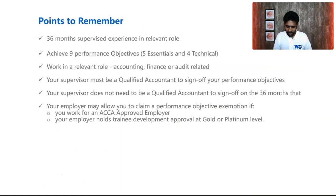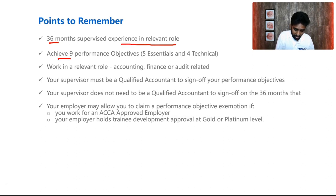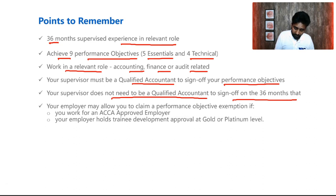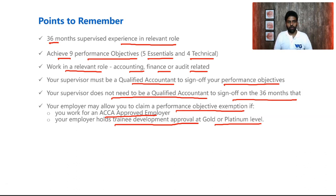To quickly summarize: to complete your PER, you need 36 months of supervised experience in a relevant role. You need to achieve nine performance objectives — five essential, four technical. You need to work in a relevant role like accounting, finance, or audit. Your supervisor must be a qualified accountant to sign off your performance objectives, but does not need to be a qualified accountant to sign off on your time. If you are working for an approved employer or one with trainee development approval at gold or platinum level, you can claim exemption from the objectives.